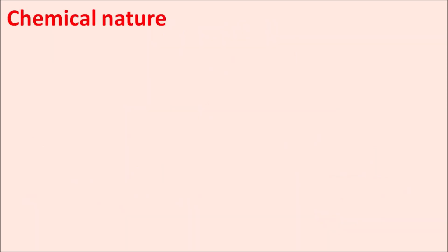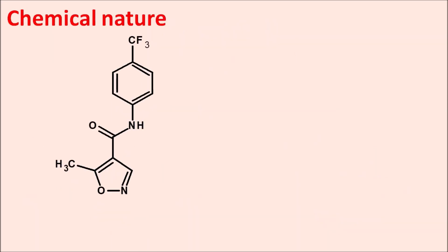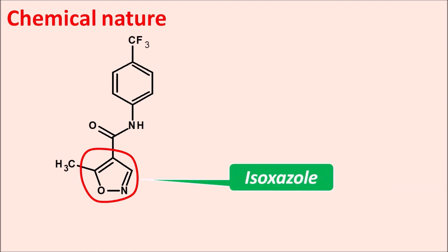Now let us look at the chemical nature of this drug. This is the structure of leflunomide, and here we can identify a heterocyclic ring system with oxygen and nitrogen. This ring system is isoxazole, so leflunomide is an isoxazole derivative.